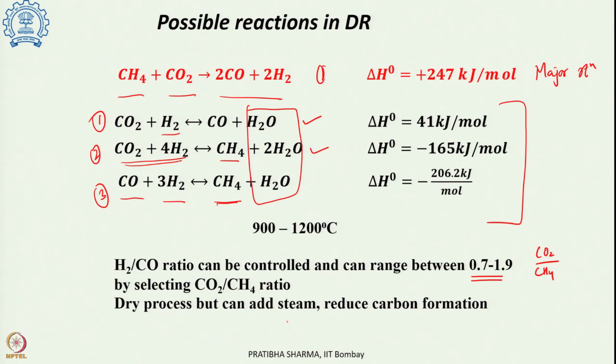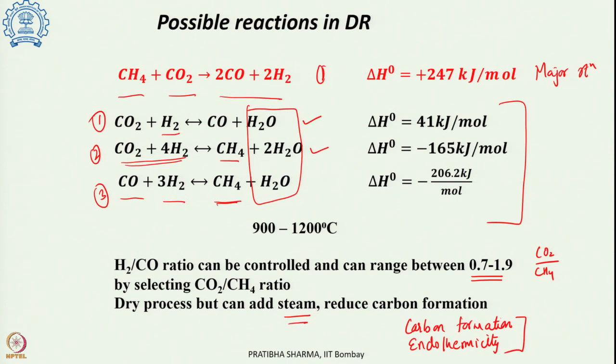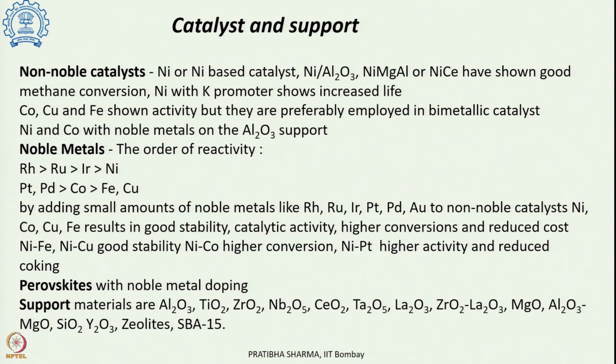We can also add some steam to the process, which has the advantage of reducing carbon formation. Since CO2 is used as the oxidant, carbon formation is a major bottleneck. The two major bottlenecks for industrial use are the endothermicity of the process and carbon formation. Carbon formation can be reduced with appropriate catalyst, support, and promoter selection, by including steam, and by ensuring proper dispersion of the catalyst on the support.